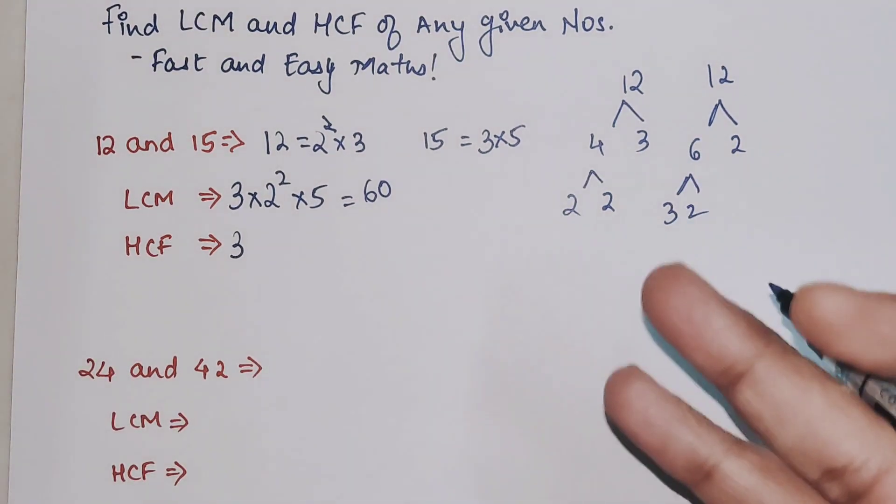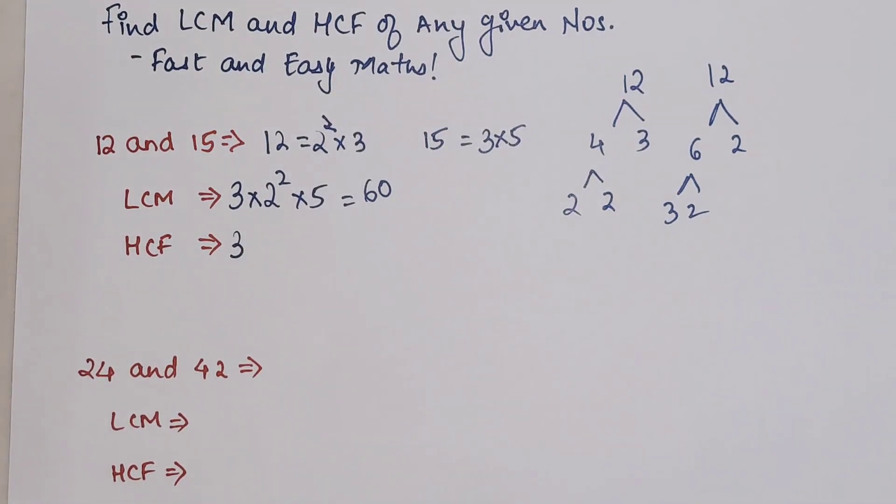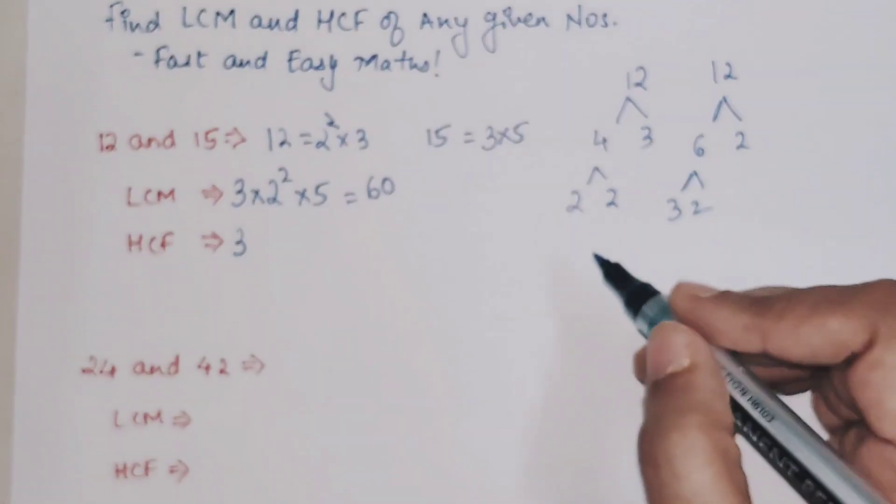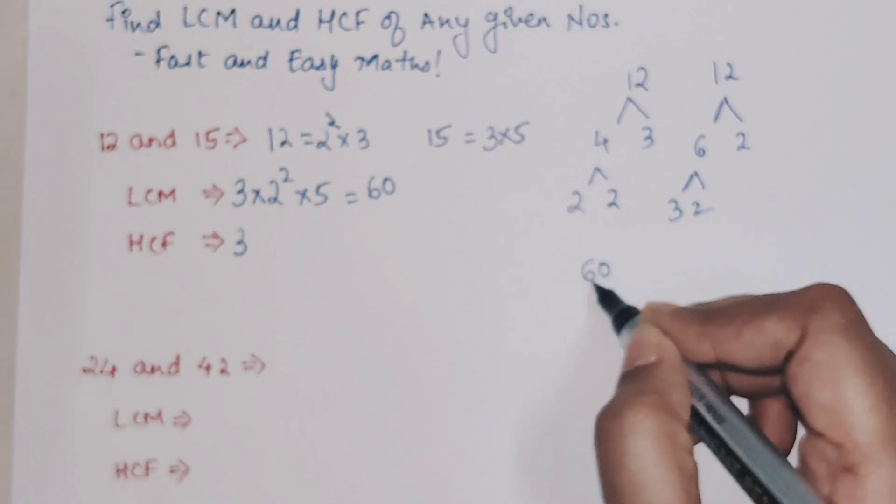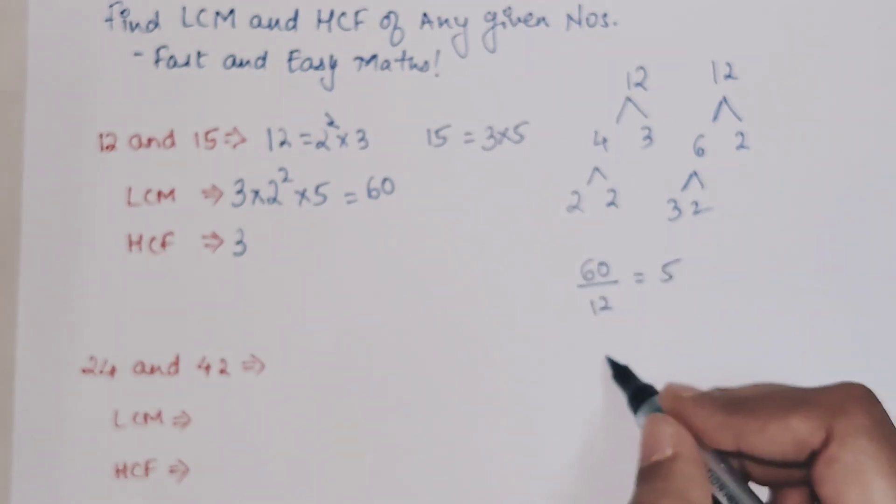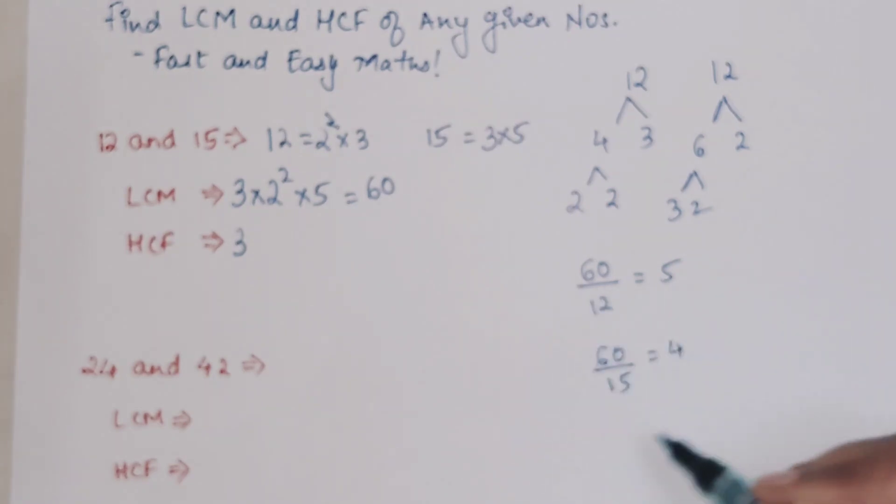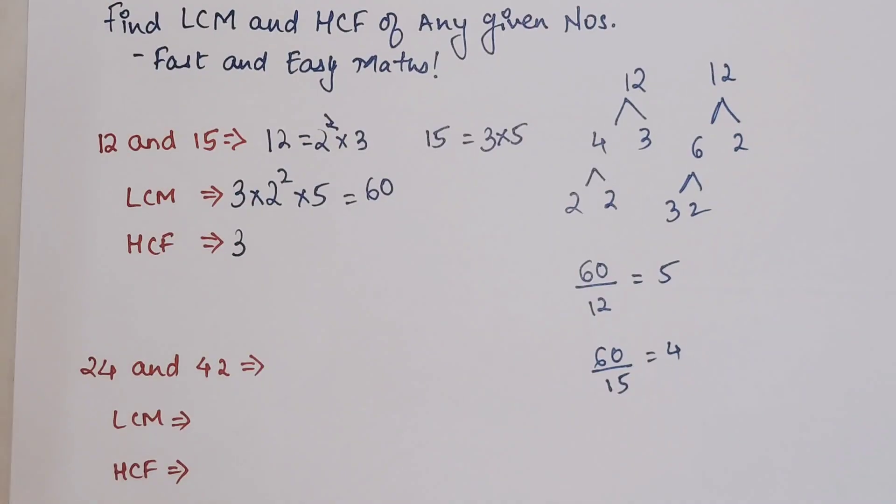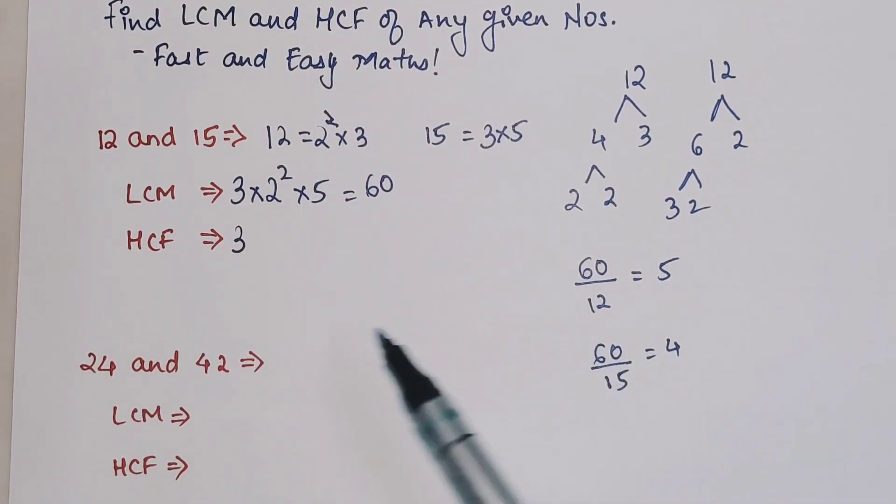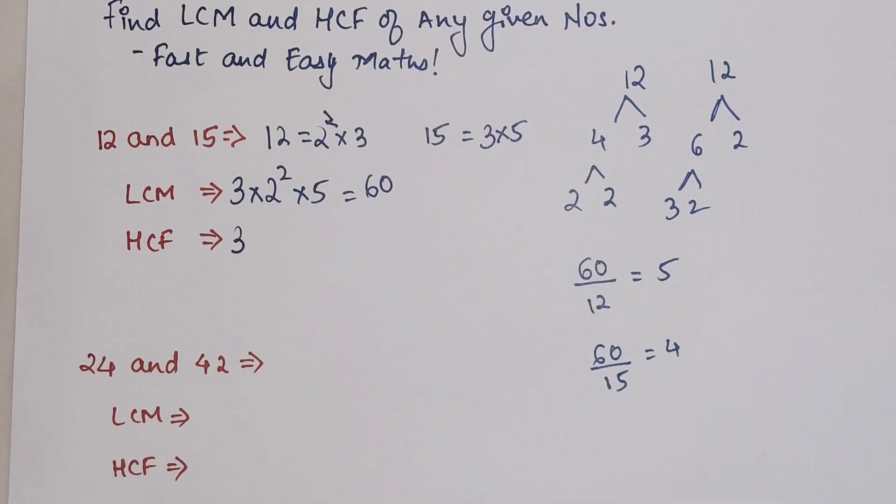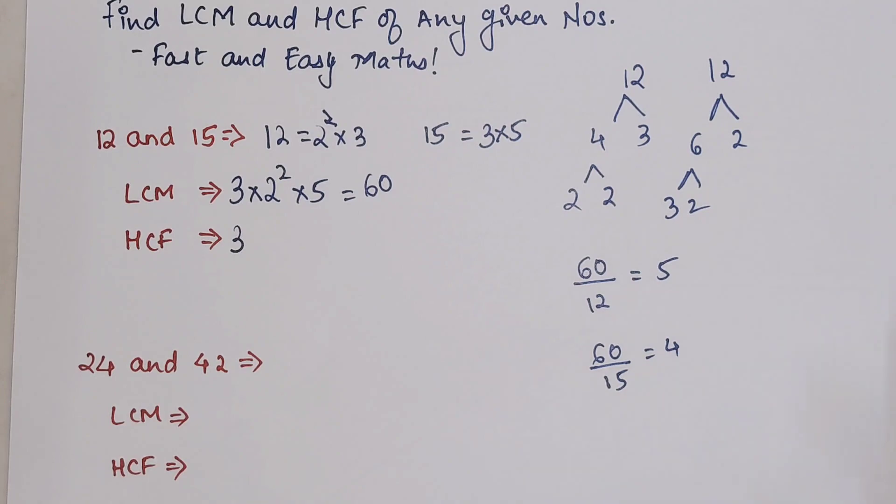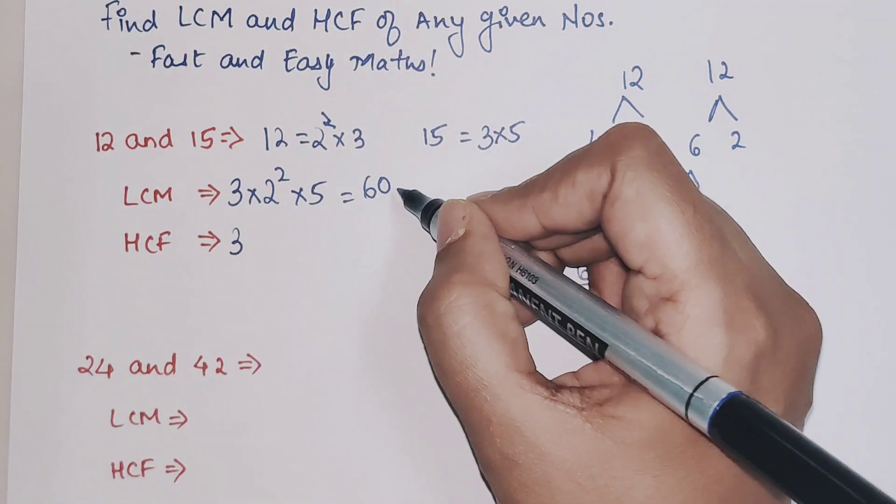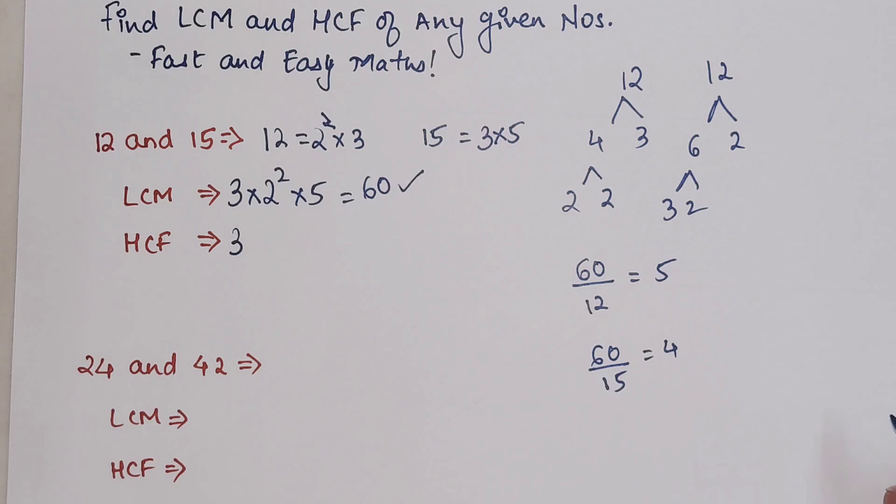Now students, I am going to show you a cross verification method. Whenever you find the LCM, you will be able to figure out whether you have taken the right LCM or not. All you have to do is divide 60 by 12 and your answer is 5, and divide 60 by 15, your answer is 4. When you can completely divide your LCM by the numbers given without any decimal point - the remainder comes out to be 0 - then you can say the LCM taken is absolutely correct.